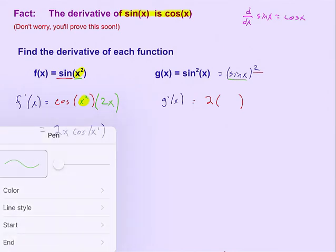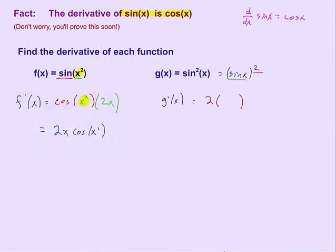And again, that inside, that sine of x, it's got to appear exactly the way you see it before we can multiply by its derivative, which is cosine of x. And so this part right here, this times cosine of x, that's the chain rule in action, times the derivative of the inside. That's the chain.